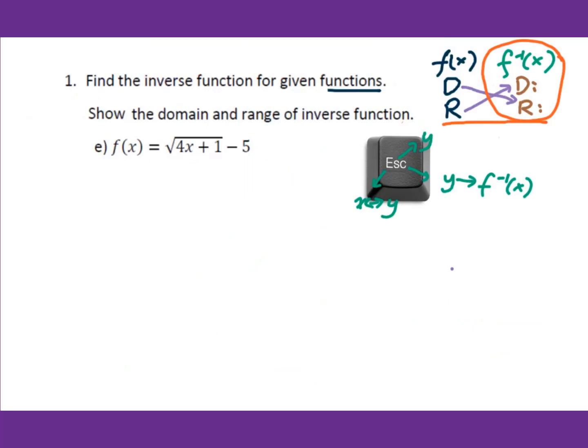Now let's work on f(x) equals square root of (4x plus 1) minus 5. Using the ESC steps — f(x) is y — the first step is to switch x and y: x equals square root of (4y plus 1) minus 5.